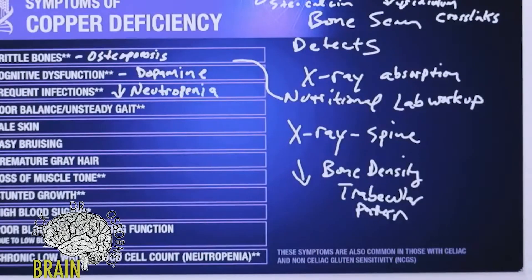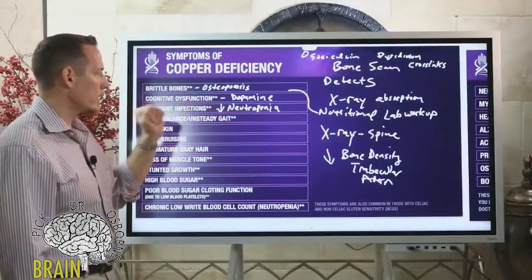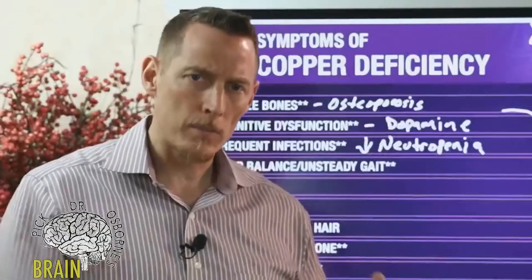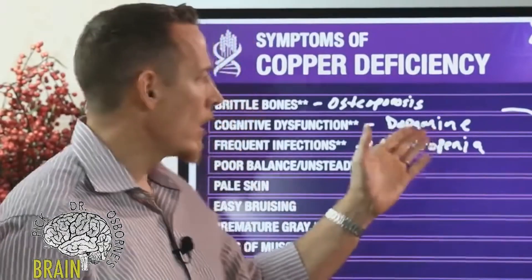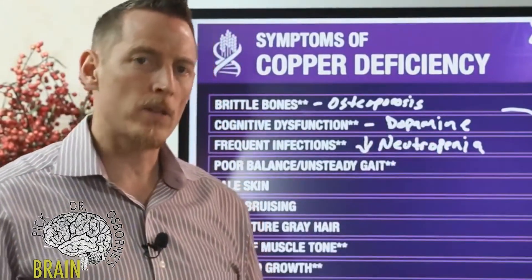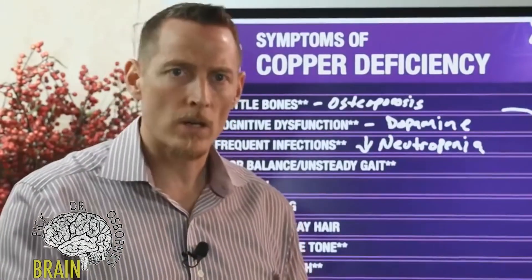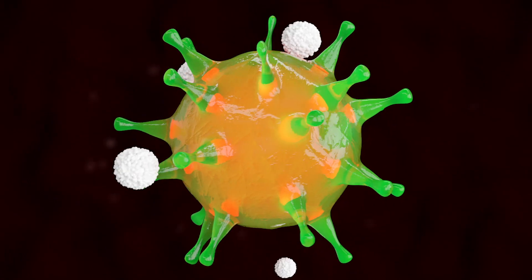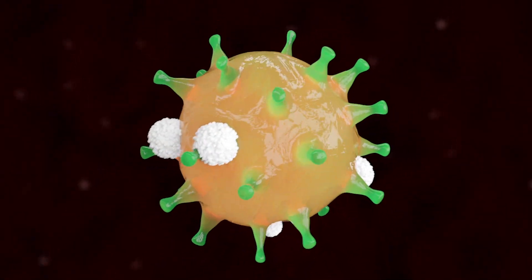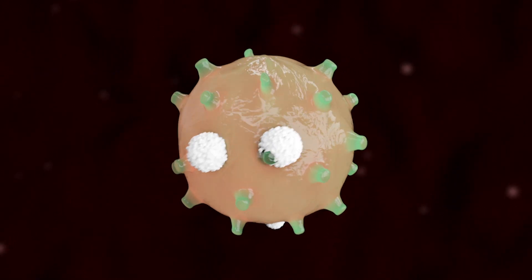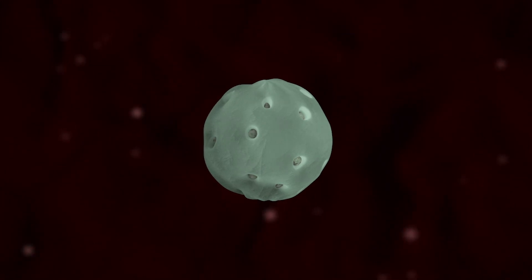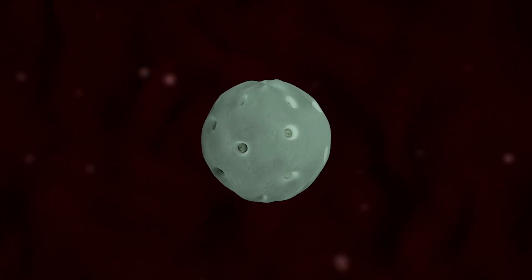Medically, low neutrophils is called neutropenia. Neutrophils are a specialized type of white blood cell — they act like the army. You've got five classes of white blood cells: neutrophils, lymphocytes, monocytes, basophils, and eosinophils. Think of those as the army, navy, air force, coast guard, and marines. If neutrophils are low, you're going to be predisposed to picking up infections.